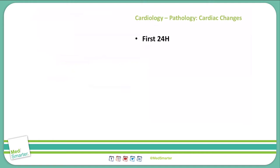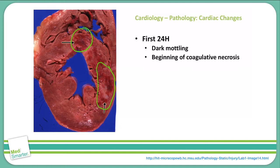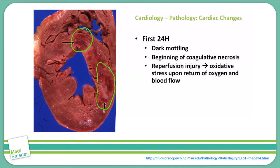First and foremost is the first 24 hours. Within the first 24 hours, we see dark mottling beginning to occur within the myocardium grossly. You can see that here in these dark spaces in the myocardium where blood flow has been reduced, and the tissue is beginning to die. This is the beginning stages of a coagulative necrosis. We also have an increased risk at this point in time of a reperfusion injury — an oxidative stress that is caused when blood flow returns to this portion of the heart.